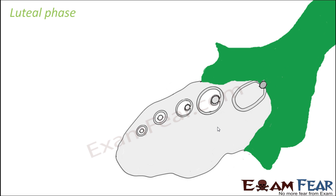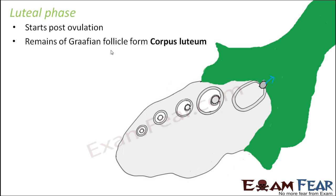The third phase is the luteal phase. Ovulation has taken place. What will happen to the remains of the graafian follicle? Because the egg went out, but the cells of the graafian follicle — some of them are still there. This phase starts after ovulation. The remains of the graafian follicle form another structure called the corpus luteum. Due to the name luteum, this phase is called the luteal phase, because this is the phase where corpus luteum is formed.